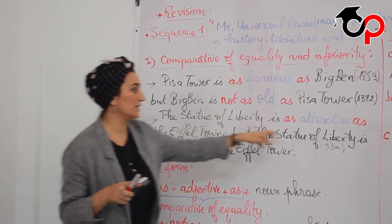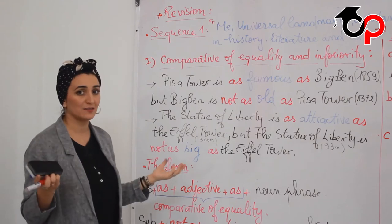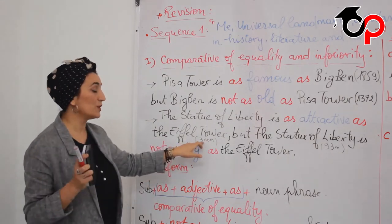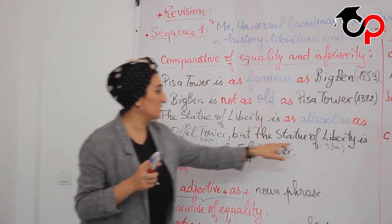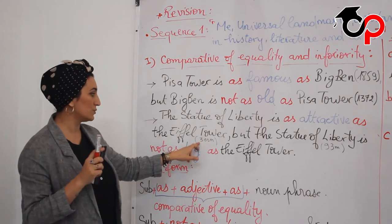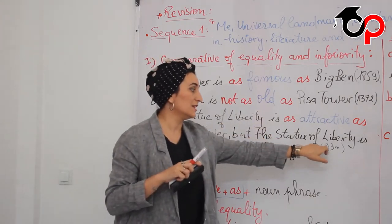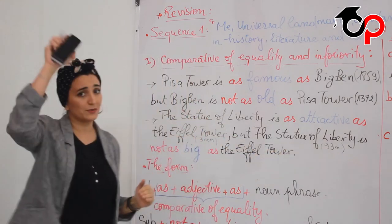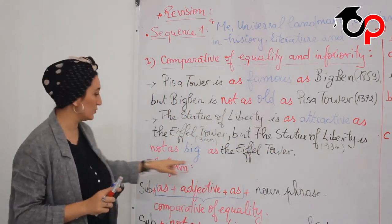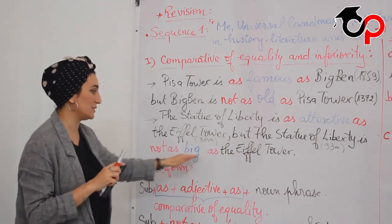But the Statue of Liberty is not as big as the Eiffel Tower. The Eiffel Tower is bigger than the Statue of Liberty in terms of size. The Eiffel Tower is 300 meters high, while the Statue of Liberty is 93 meters. There is a very big difference, that's why we use 'not as big as the Eiffel Tower.'